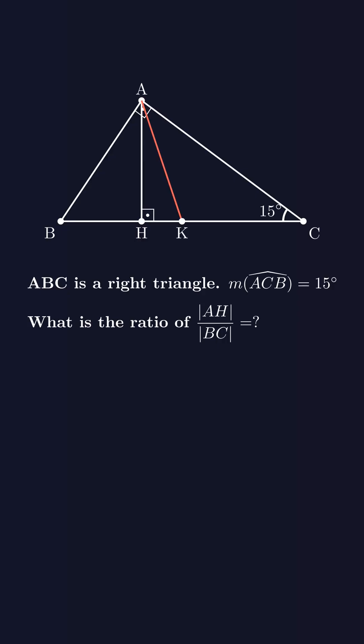Let's draw a median from point A to side BC. In a right triangle, the median drawn from the right angle vertex to the hypotenuse divides the hypotenuse into two equal segments and creates two congruent triangles. So then AK, BK, and KC become equal. That means angle KAC is also 15 degrees.